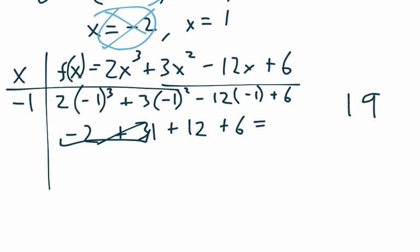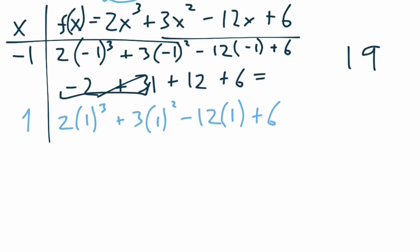And then for the next one, which is positive 1, we have 2 times 1 cubed plus 3 times 1 squared minus 12 times 1 plus 6. That's going to be 2 plus 3 minus 12 plus 6. 6 plus 2 plus 3 is 11. 11 minus 12 is negative 1.